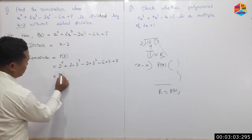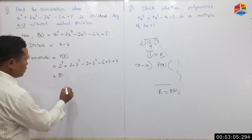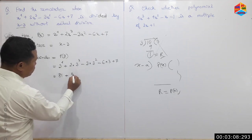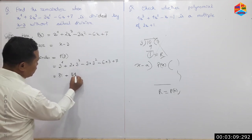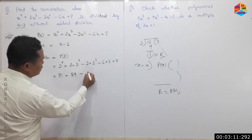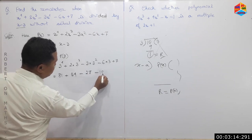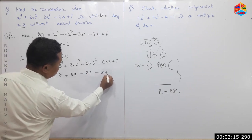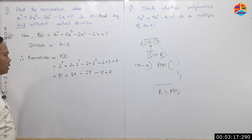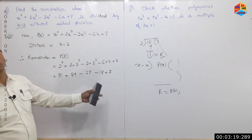C is 1. Plus 27 into 2 is 54. This is 27. It is minus 18 plus 7. This is P of 4.